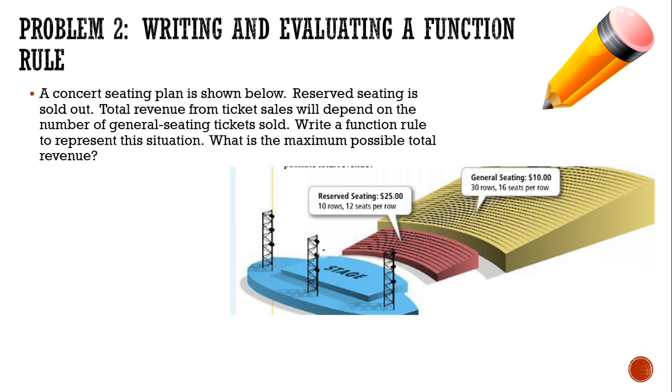What is the maximum possible total revenue? So they said reserve seating is sold out. The first thing I'm going to do is figure out total revenue. That is ticket sales of everything, right? So I know my total revenue is going to equal the money I make off of reserve seating plus the money I'm going to make off of general seating. So let's figure out this reserve seating. They said we're sold out. So it's $25 for every seat I have in reserve seating. So I have 10 rows with 12 seats per row. So that would mean I have 10 times 12 seats, which is 120 seats. So I know that I have $25 for each of those 120 seats. So I've got 25 times 120.